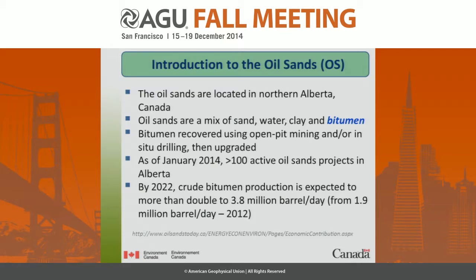For those of you that don't know, the oil sands are located in northern Alberta, Canada, and as the name suggests, oil sands are a mix of sand, water, clay, but most importantly, bitumen, because it's this bitumen that's recovered through open pit mining or in-situ drilling, ultimately upgraded and turned to crude oil.